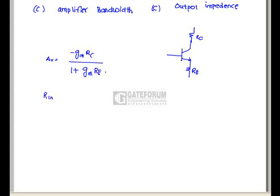Input impedance is defined as h_ie plus (1 plus h_fe) RE. And amplifier bandwidth is defined as: gain bandwidth product equals gain into bandwidth.